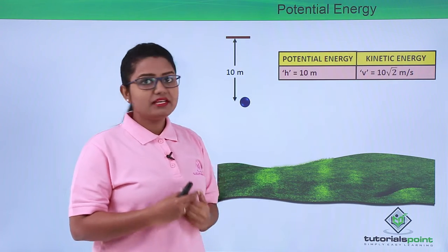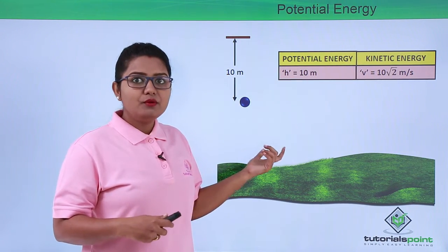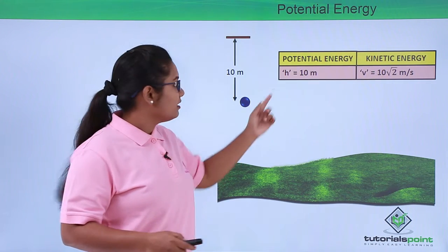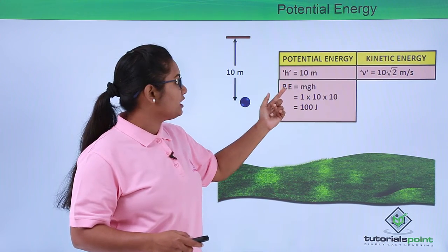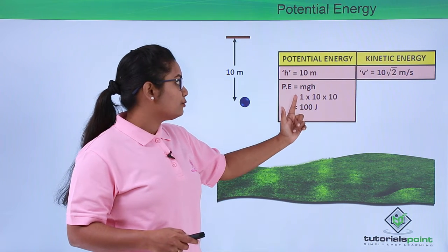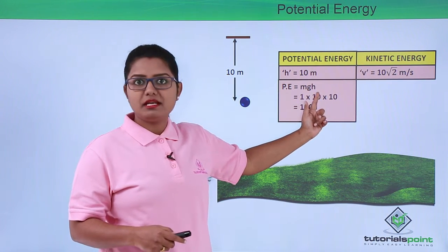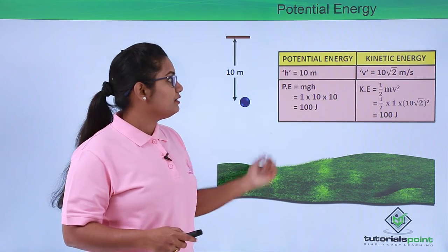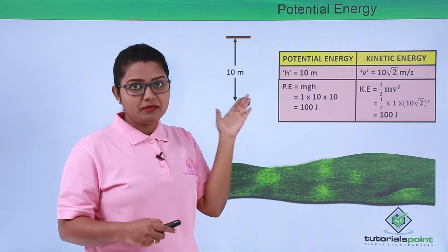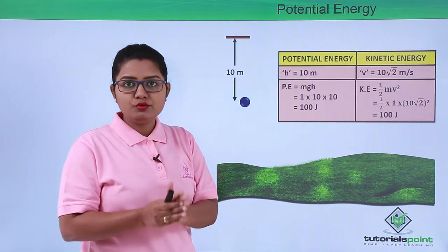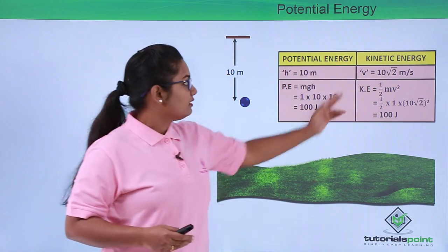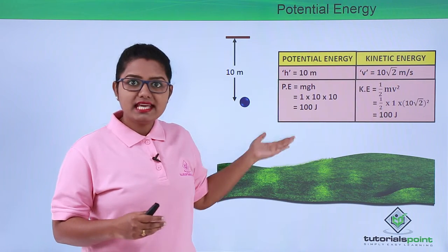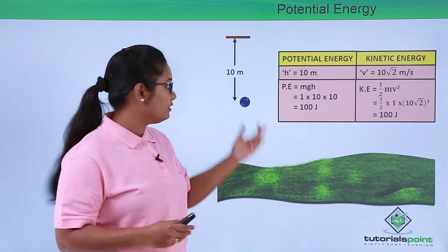We will use these two values to find out the potential and kinetic energy of the ball at this point. Using the formula for potential energy, mgh, we get 1 times 10 times 10, which is 100 joules. The kinetic energy will be half mv squared, which is one-half times 1 times (10 root 2) squared, giving us a kinetic energy of 100 joules.